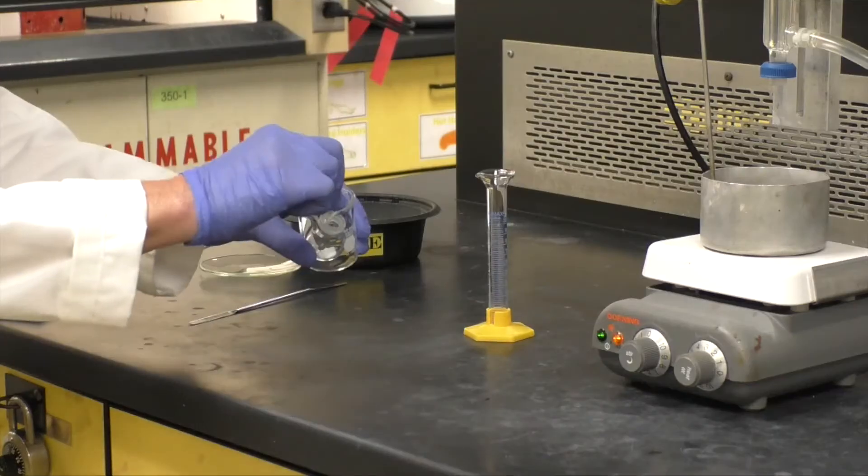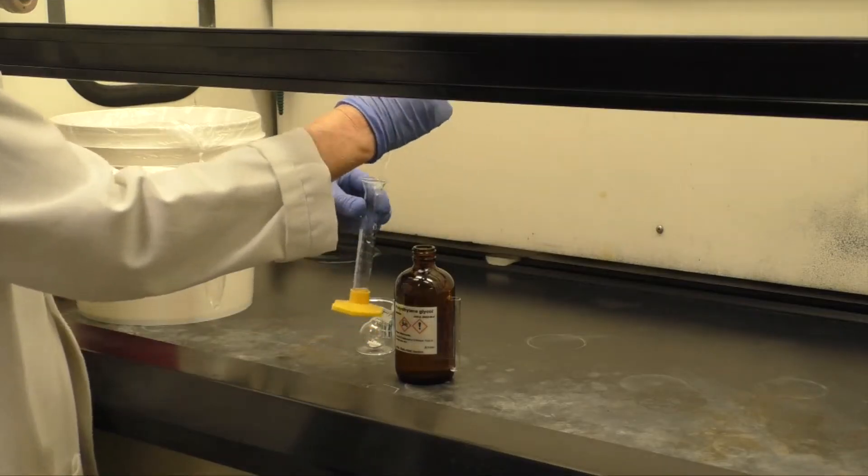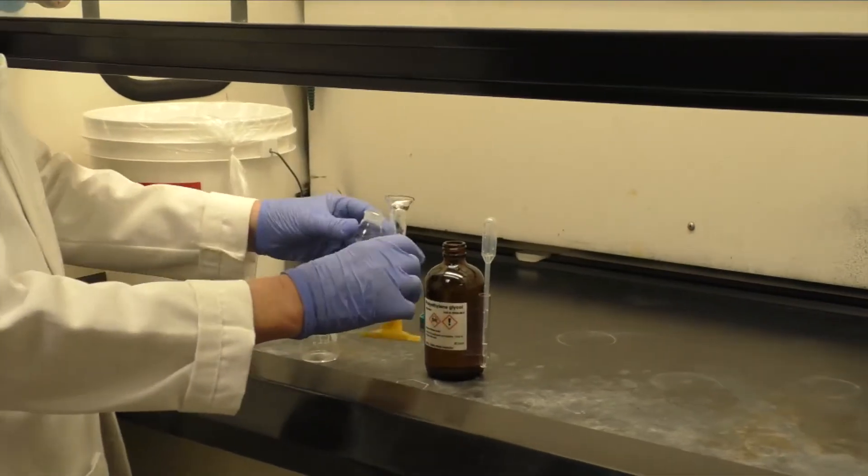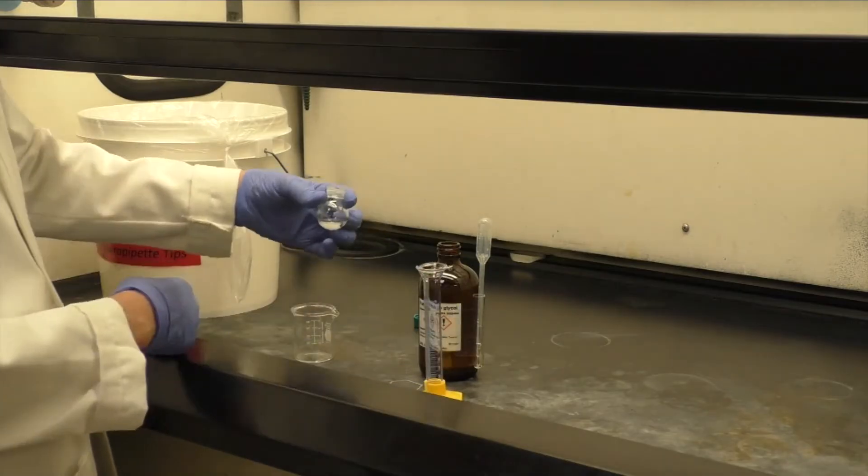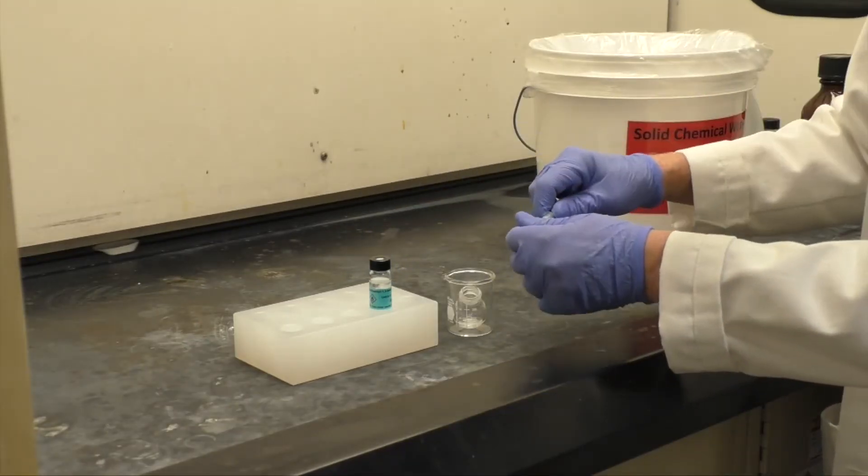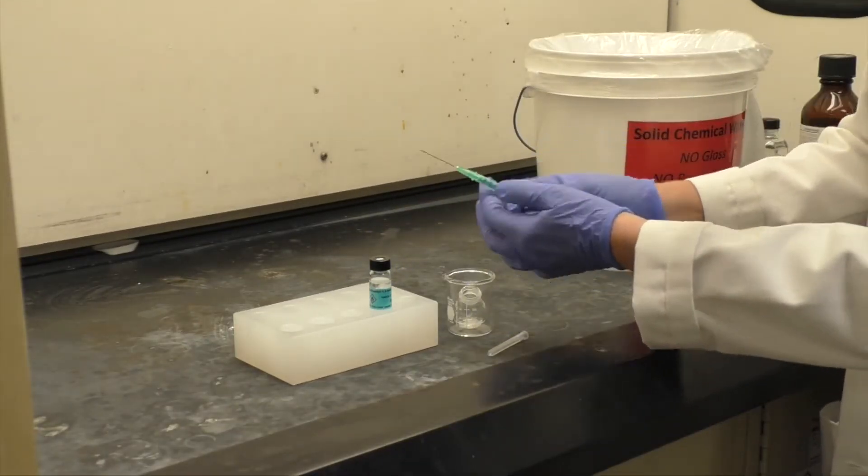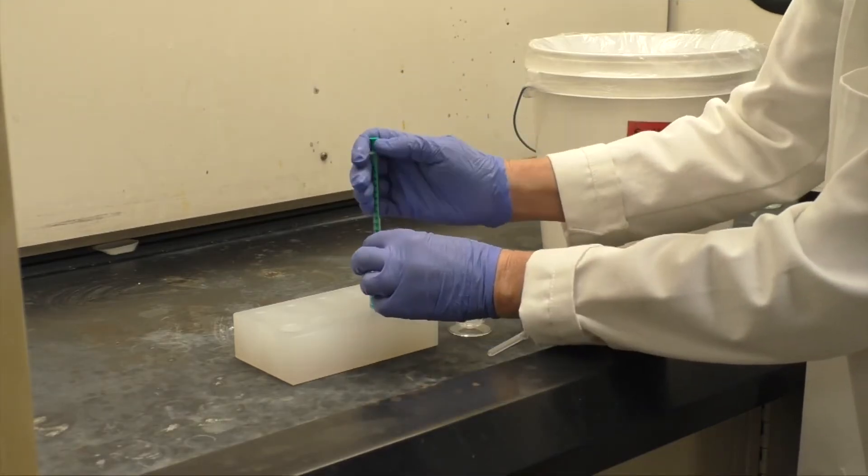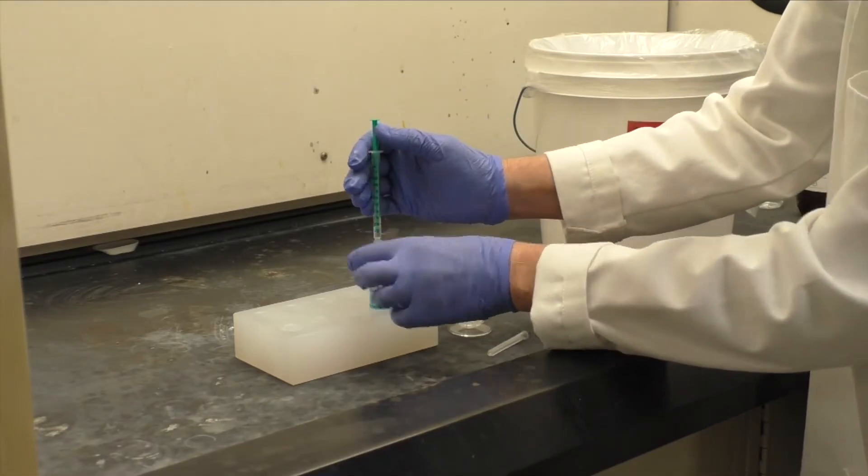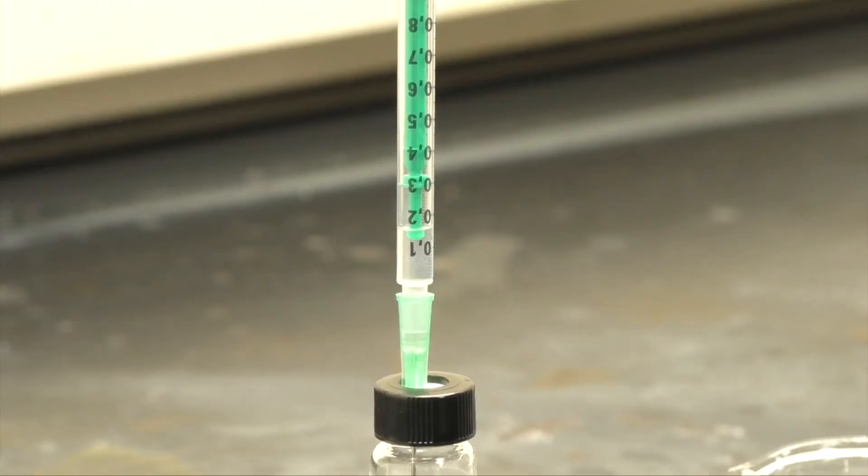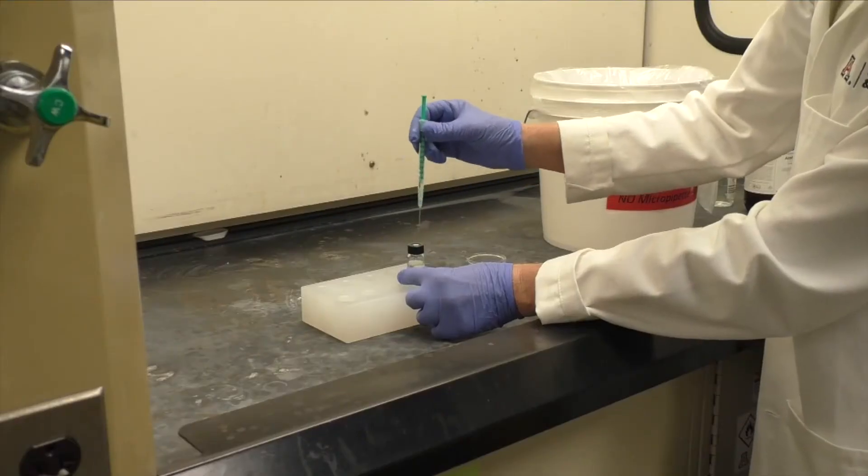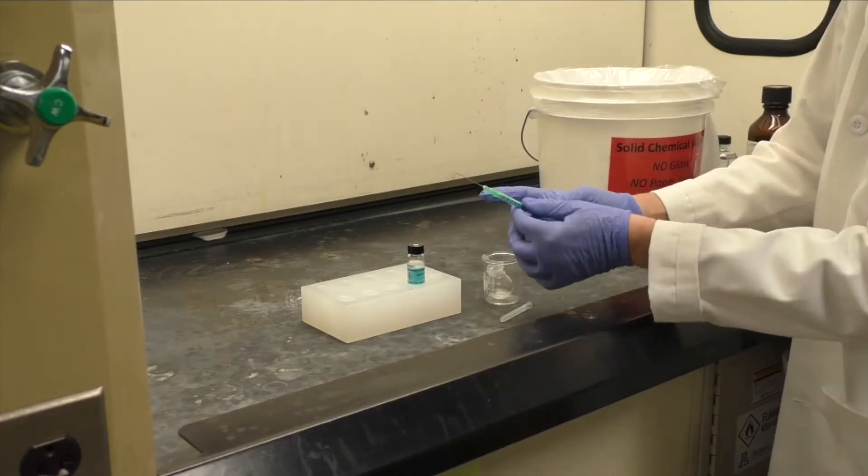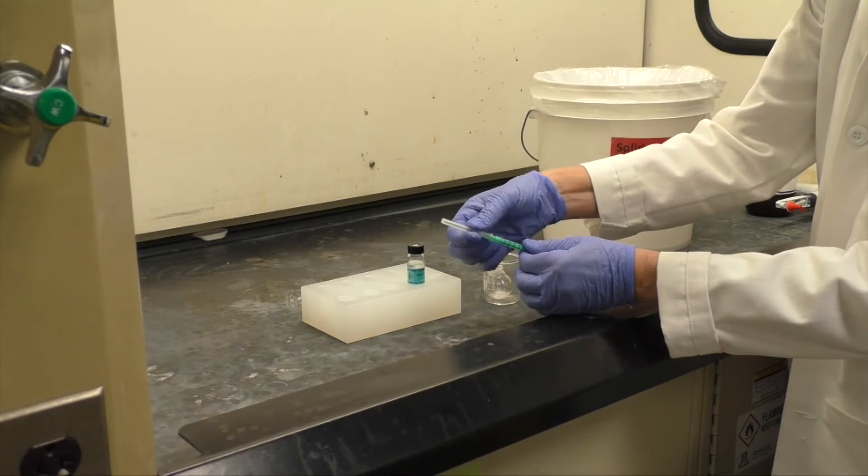Next, add a stir bar and 1 milliliter of PEG 200. Then, using a needle and syringe, add your calculated equivalent of 2,3-dimethyl-1,3-butadiene to the round bottom flask. Be sure to follow all the established safety protocols for obtaining and disposing of your syringe and needle.